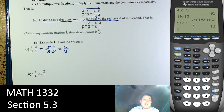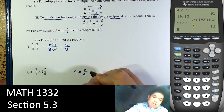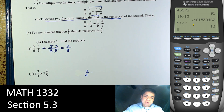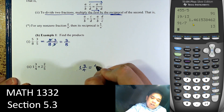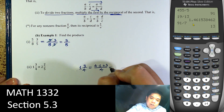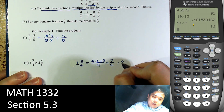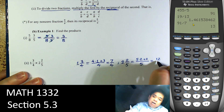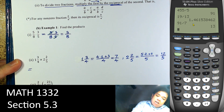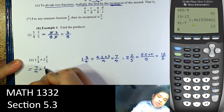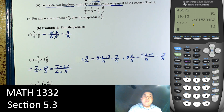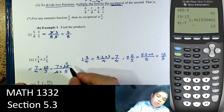Next we have two mixed numbers to multiply. Convert them to improper fractions first. 1 and 3/4 becomes: 4 times 1 plus 3 over 4 — that's 7 over 4. And 2 and 2/5 becomes: 5 times 2 plus 2 over 5 — that's 12 over 5. So the product is 7/4 times 12/5. Multiply 7 times 12 over 4 times 5; 4 and 12 cancel to give 3, so we have 21 over 5.